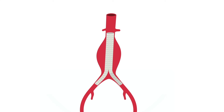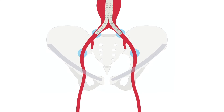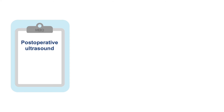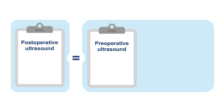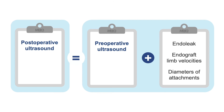Recall that most endografts are placed so that the proximal landing zone is just below the renal arteries and the distal landing zones are in the right and left common iliac arteries, although sometimes the external iliac or common femoral arteries are used. The postoperative ultrasound protocol includes the same steps as the preoperative ultrasound, plus checking for endoleak, endograft limb velocities, and diameters of the attachments at the distal landing zones. In this lesson, we review a sample postoperative endograft protocol of the aorta.